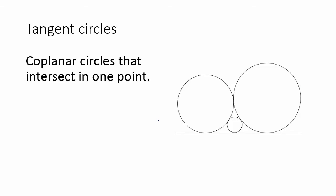Tangent circles: coplanar circles that intersect in one point. Looking at this picture, all three of these circles are tangent. These two circles are tangent because they intersect at this point over here. These two circles are tangent because they intersect at this point over here. The medium and the large circle are tangent because they intersect at this point over here.